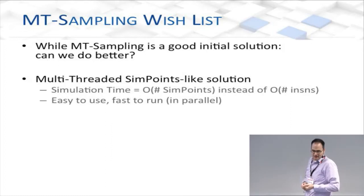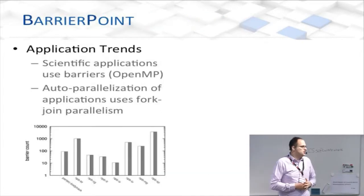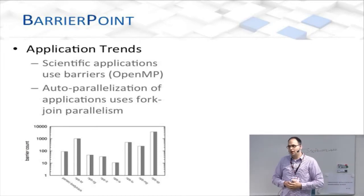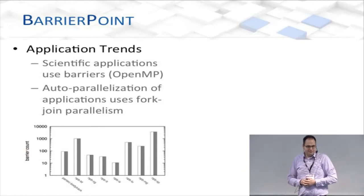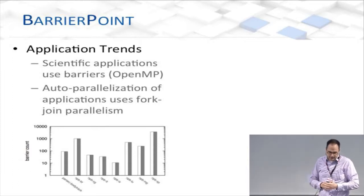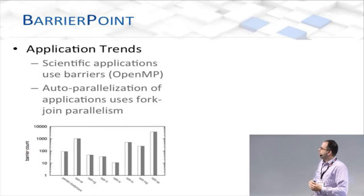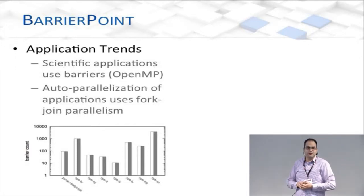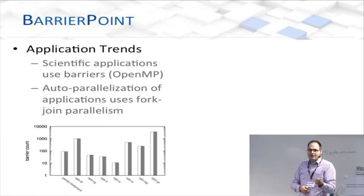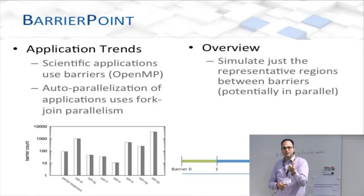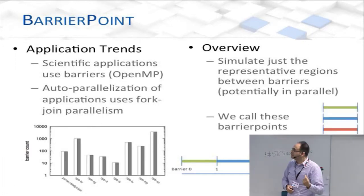Multi-threaded SimPoints is not a valid solution. But what did we notice? Many of these parallel applications use a programming technique called OpenMP, which uses barrier-based synchronization. Looking at this graph for Parsec parallel benchmarks with class A input, you can see many of these inputs have a large number of barriers — in the range of 1,000 to almost 10,000. Instead of representative regions based on instructions, we want to take representative regions based on barriers, look at similarities, and only execute those barrier-based regions. We call these barrier points.